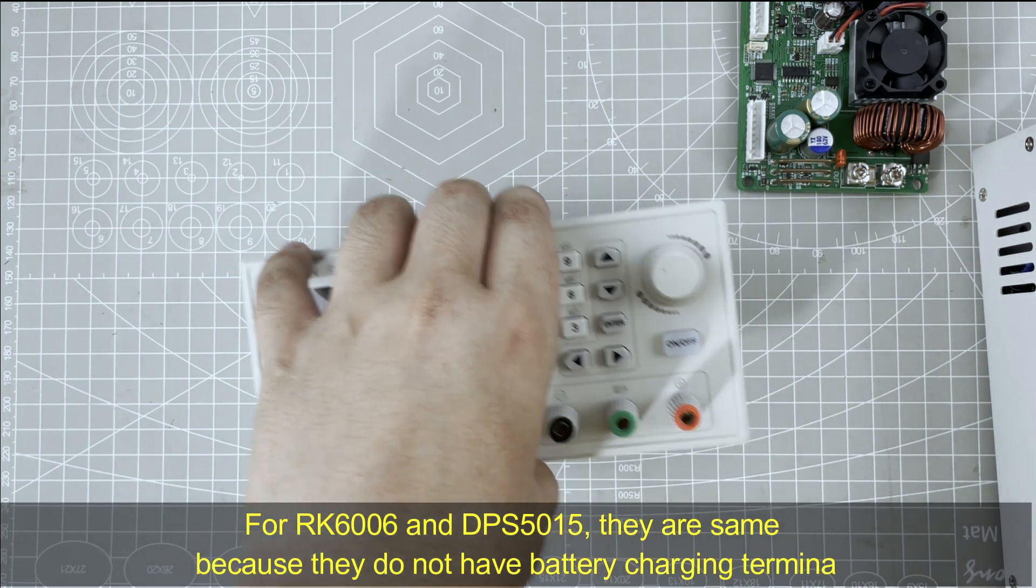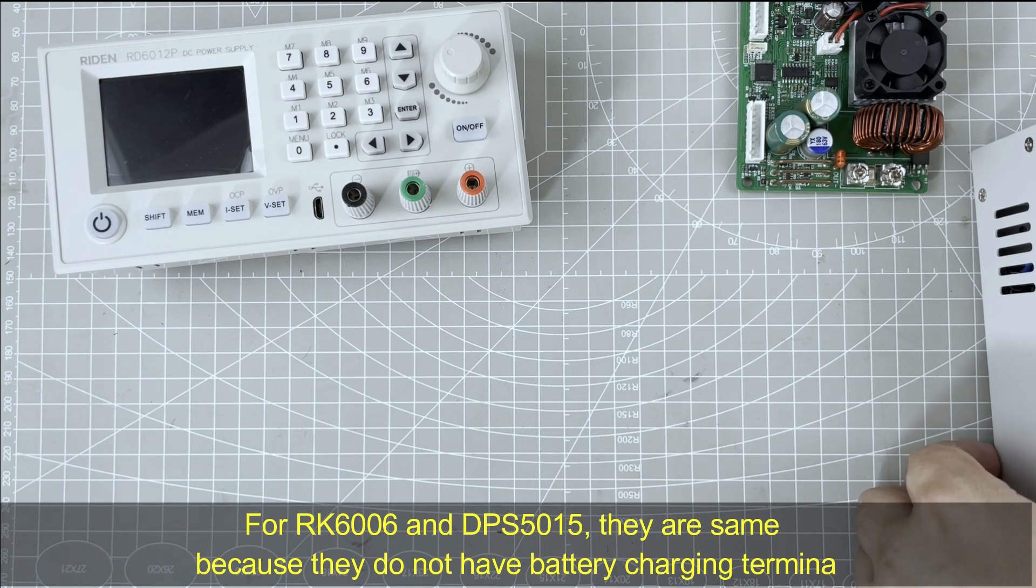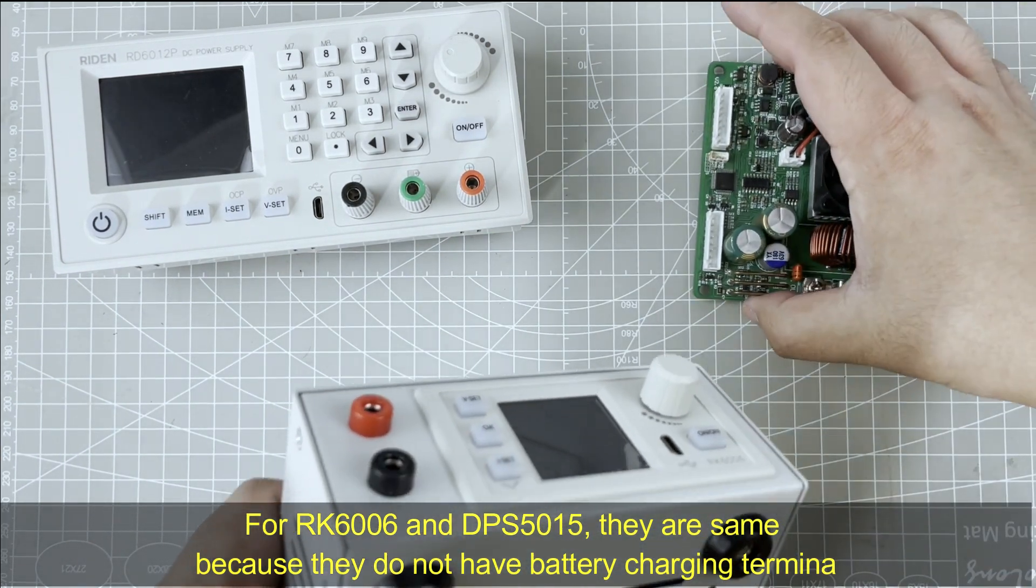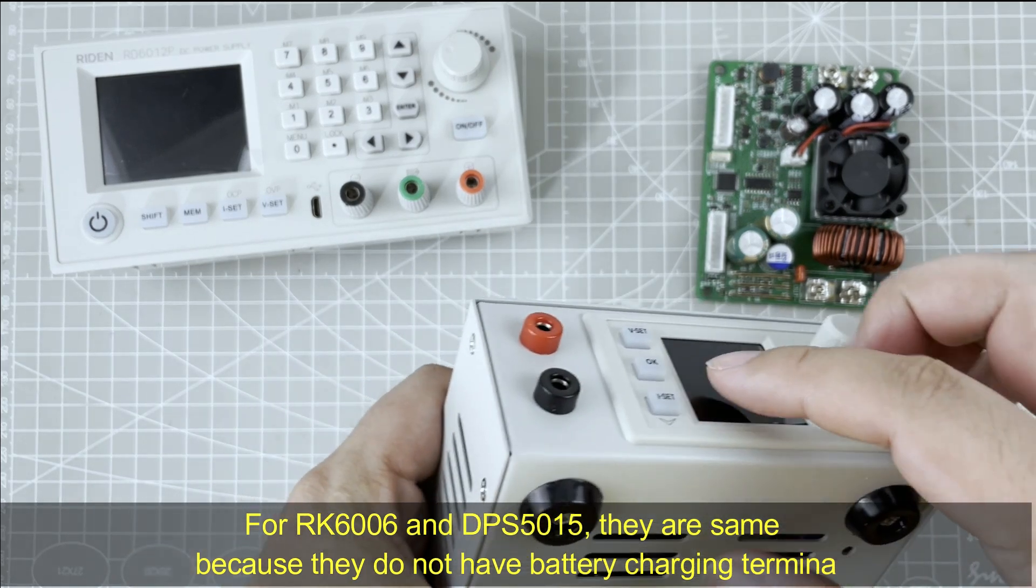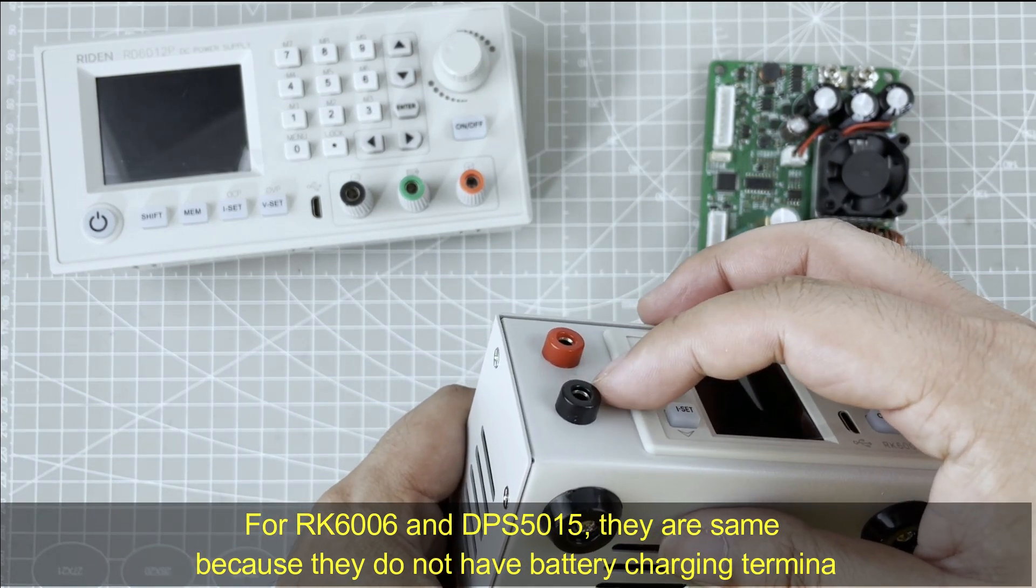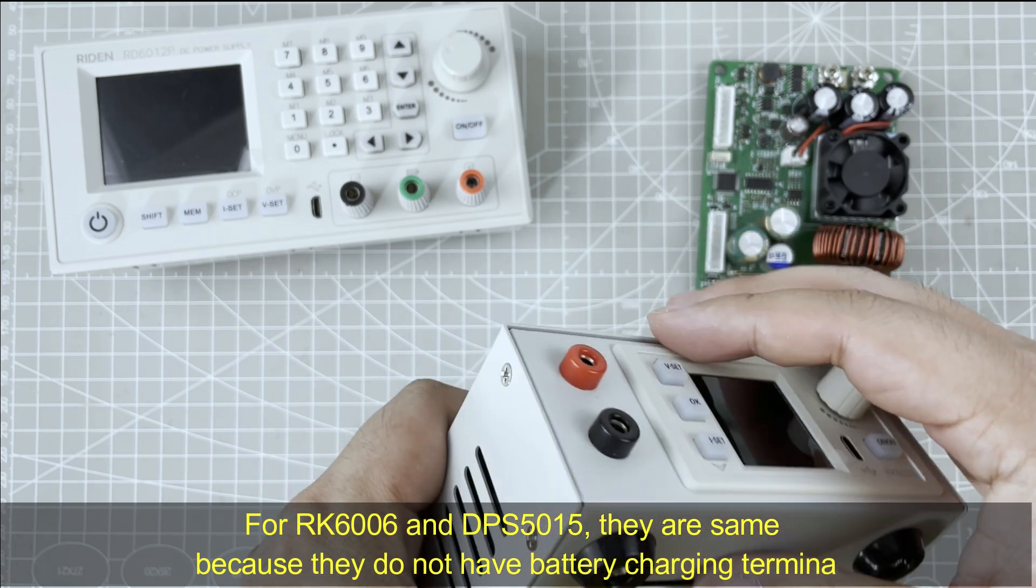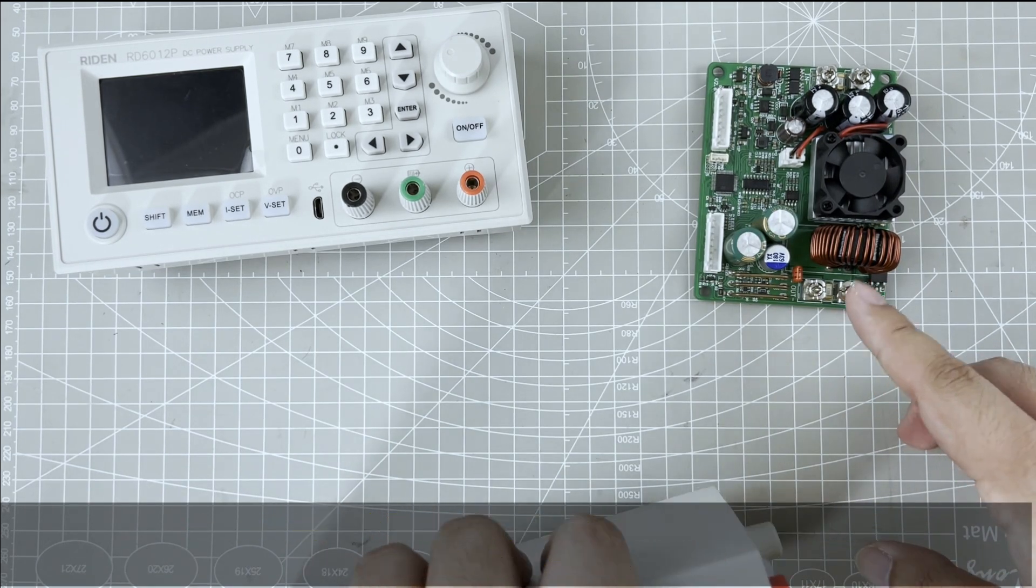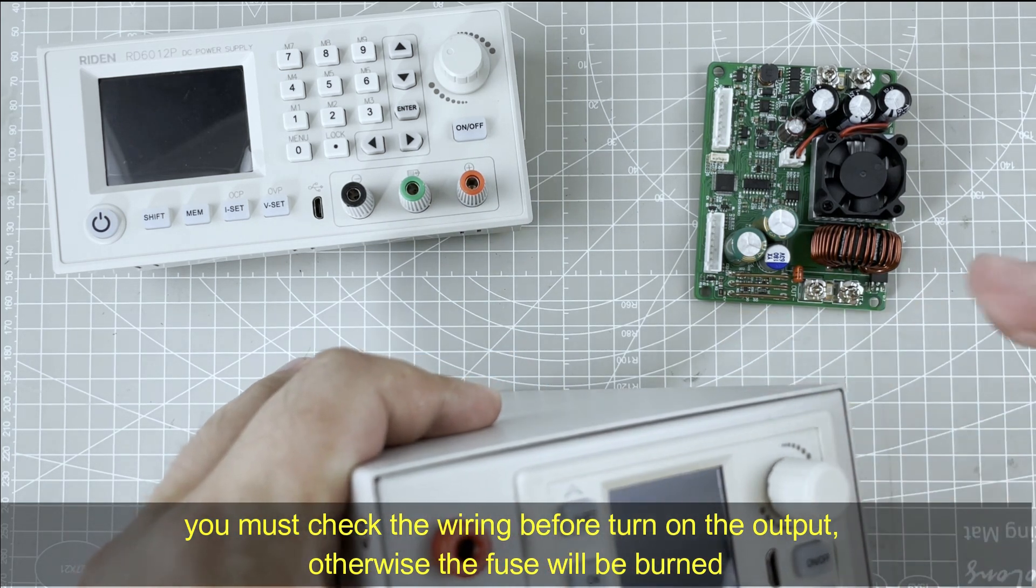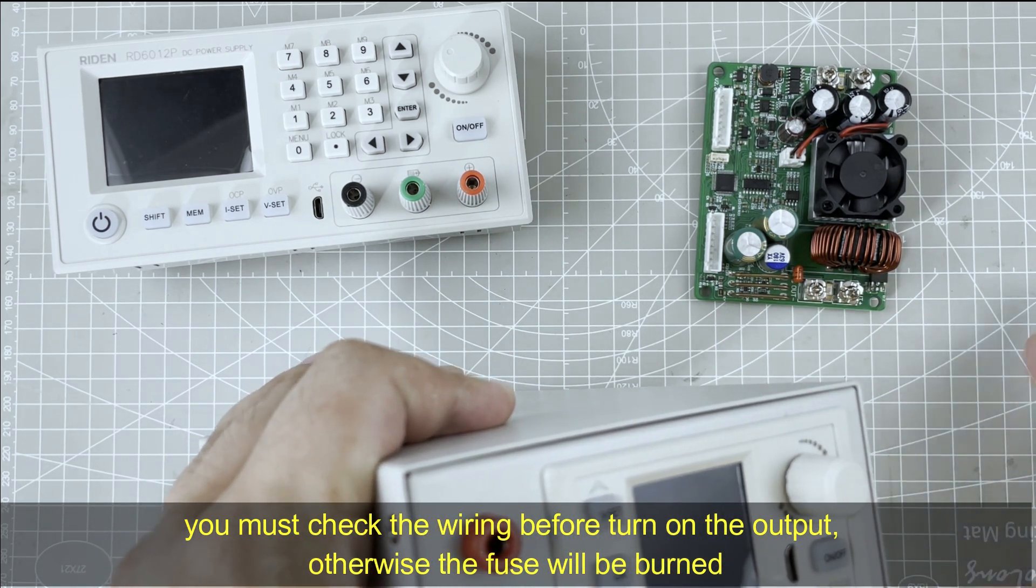For RK6C06 and DPS5015, just like this. They are different because there are only two output terminals. There is no battery charging terminal. So you need to be careful before you turn on the output for battery charging.